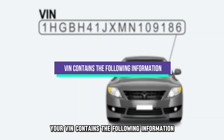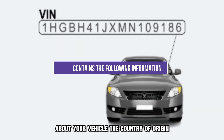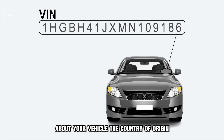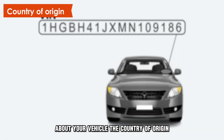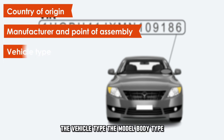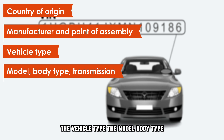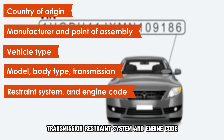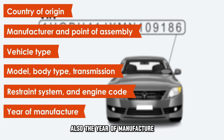Your VIN contains the following information about your vehicle: the country of origin, the manufacturer and point of assembly, the vehicle type, the model, body type, transmission, restraint system, engine code, and also the year of manufacture.